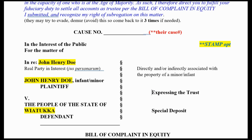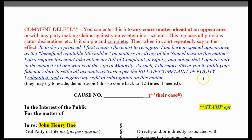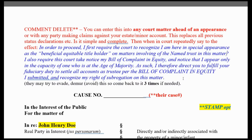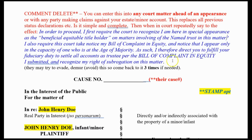Stand on it in your next appearance and say: 'I'm not here to do all that other gobbledygook, but before I can proceed I require the court to recognize I'm here by special appearance as the beneficial equitable title holder on matters involving the named trust' — that would be your name and the case. 'I also require this court to take notice of my bill and complaint of equity. I appear only in the capacity of one who is at the age of majority. As such, I therefore direct you to fulfill your fiduciary duty to settle all accounts as trustee per the bill of complaint and equity, per this directive. I recognize my right of subrogation in this matter' — simply meaning you have a right to come in and take your position.